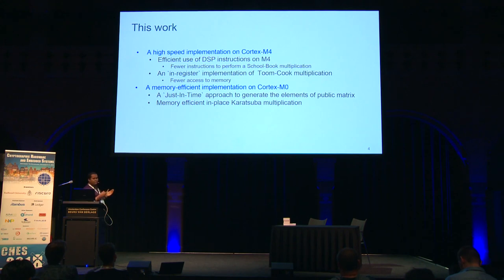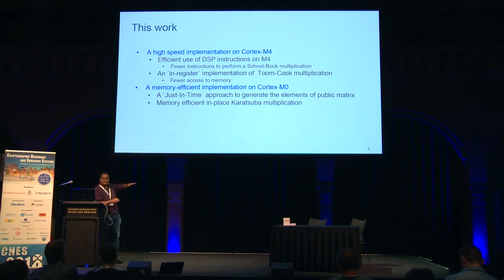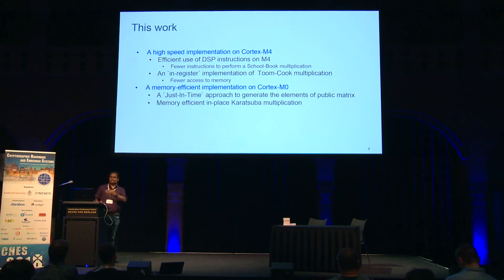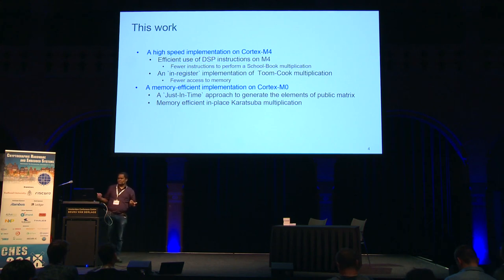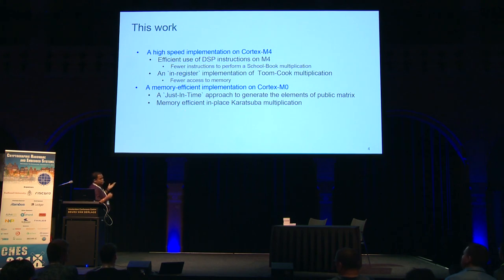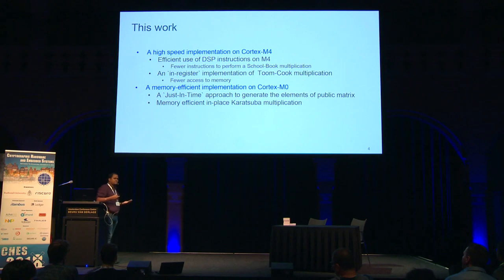We provide two types of implementations. One is a very high-speed implementation on Cortex-M4, where we use DSP instructions to reduce the number of multiplications in each Schoolbook multiplication. We also provide an in-register version of the Toom-Cook multiplication, which actually reduces memory accesses a lot. We have another compact, memory-efficient version on Cortex-M0. We show a just-in-time approach to generate the public matrix, which is very memory-hungry in module-lattice-based cryptography, and we also provide some optimizations using in-place Karatsuba multiplication.